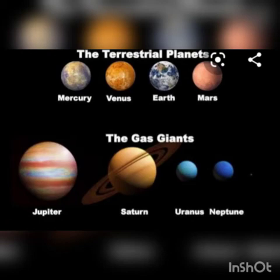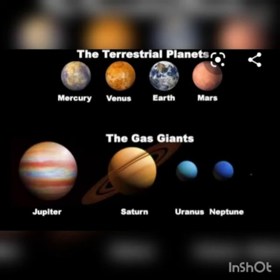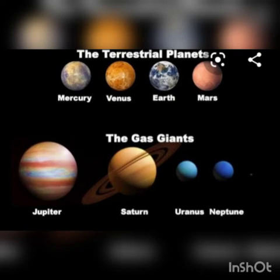The outer planets like Jupiter, Saturn, Uranus, and Neptune are known as gas giants. They are liquid and gaseous in nature. So there are two types of planets: rocky terrestrial planets and gas giant planets.